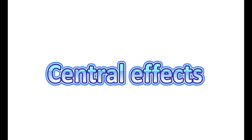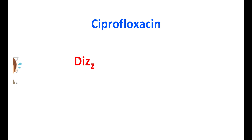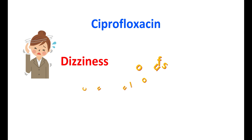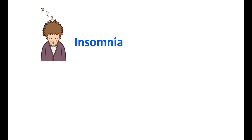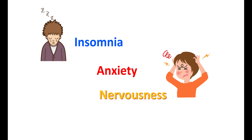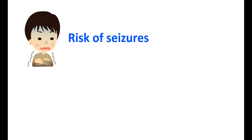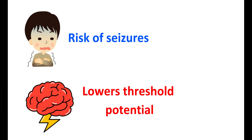Ciprofloxacin can increase dizziness. It can produce a state of confusion and people may also have hallucinations. It can also produce insomnia, lack of sleep, and a state of anxiety and nervousness. Even though ciprofloxacin is safe under normal doses, at higher doses it can increase the risk of seizures since this drug lowers the threshold potential for induction of seizures. In people with any pre-existing seizures or any history of epilepsy, ciprofloxacin should be used carefully. Even under toxic doses, ciprofloxacin can induce sudden seizures.